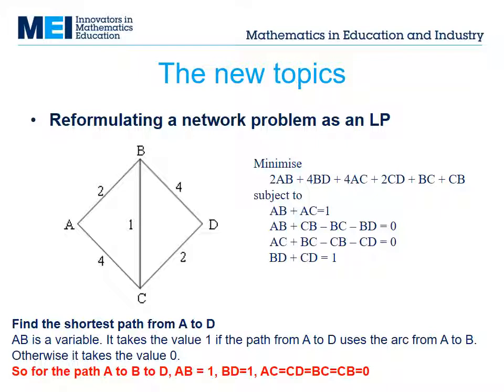Look at the example in red. Without going into great detail, the expression that you try to minimize is the length of a route through the network. Try the example in red and you should get 6.